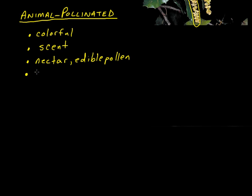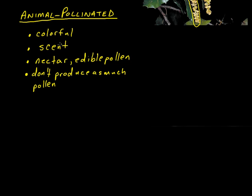As a general rule, animal-pollinated plants don't have to produce quite as much pollen, because they have animals who basically hand-deliver it from flower to flower for them. So they don't have to produce the massive quantities of pollen that wind-pollinated plants — such as many trees and all the grasses — do. Here is a photo of a typical animal-pollinated angiosperm flower.